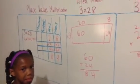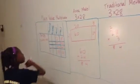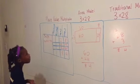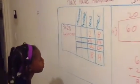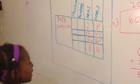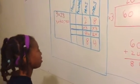I have a question. Which method do you like the best? I like the place value multiplication because the area model is kind of hard. What makes you like the place value multiplication? Because it's easy, and I understand it the most. Good.